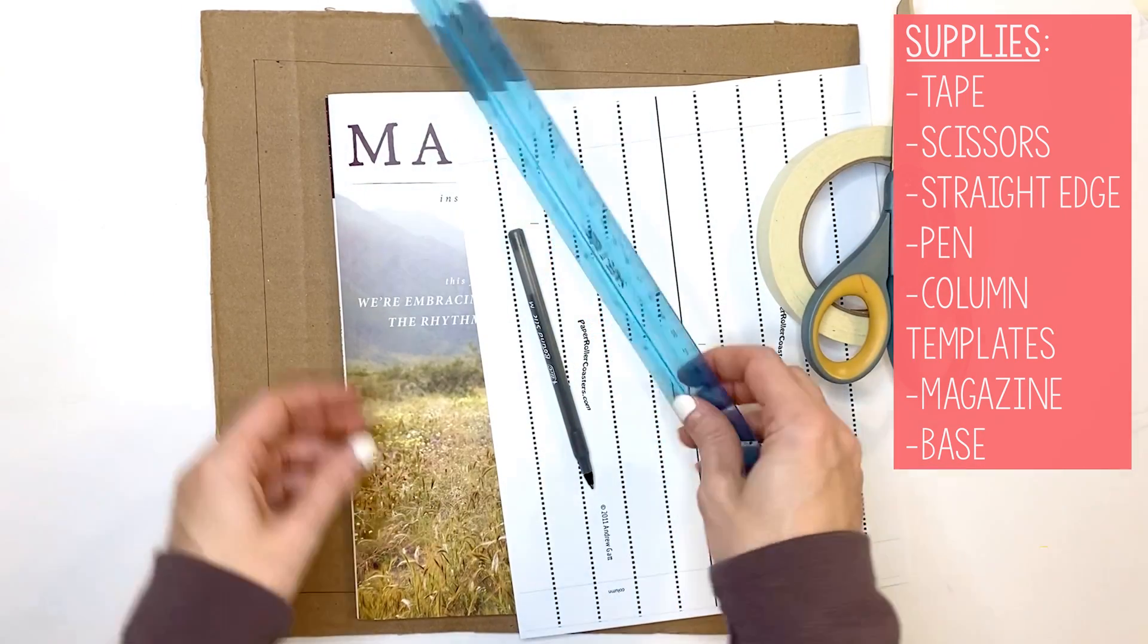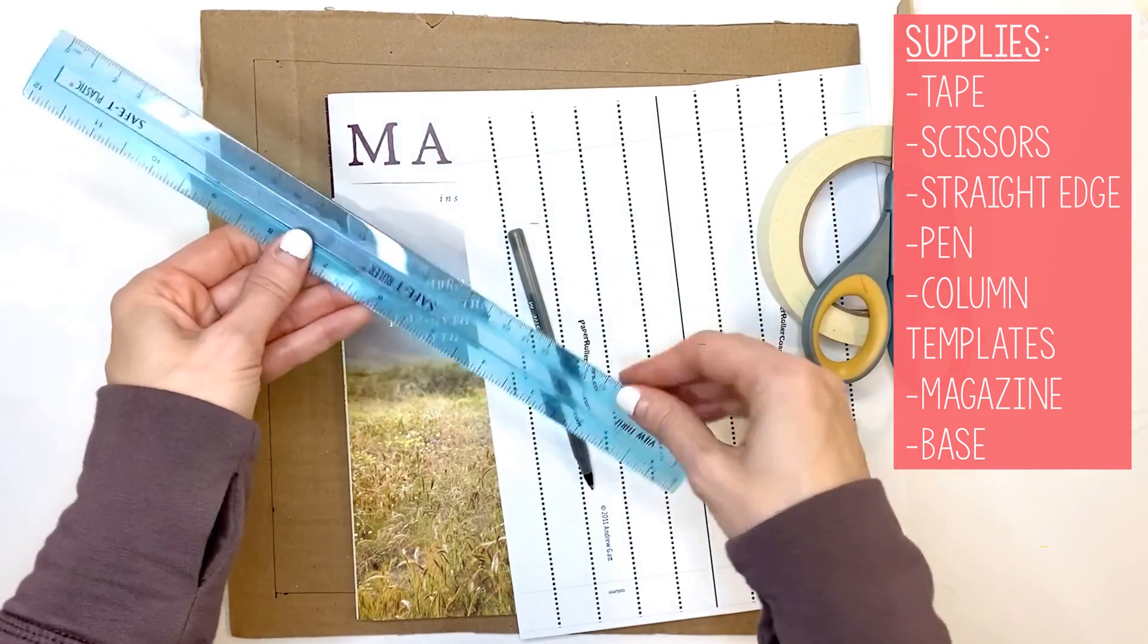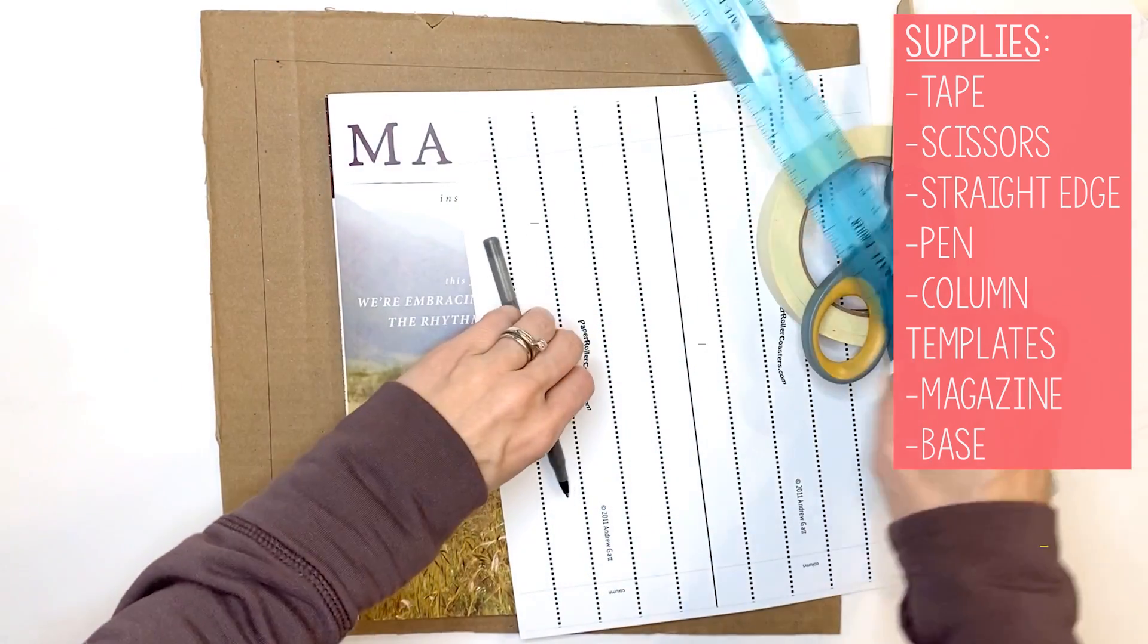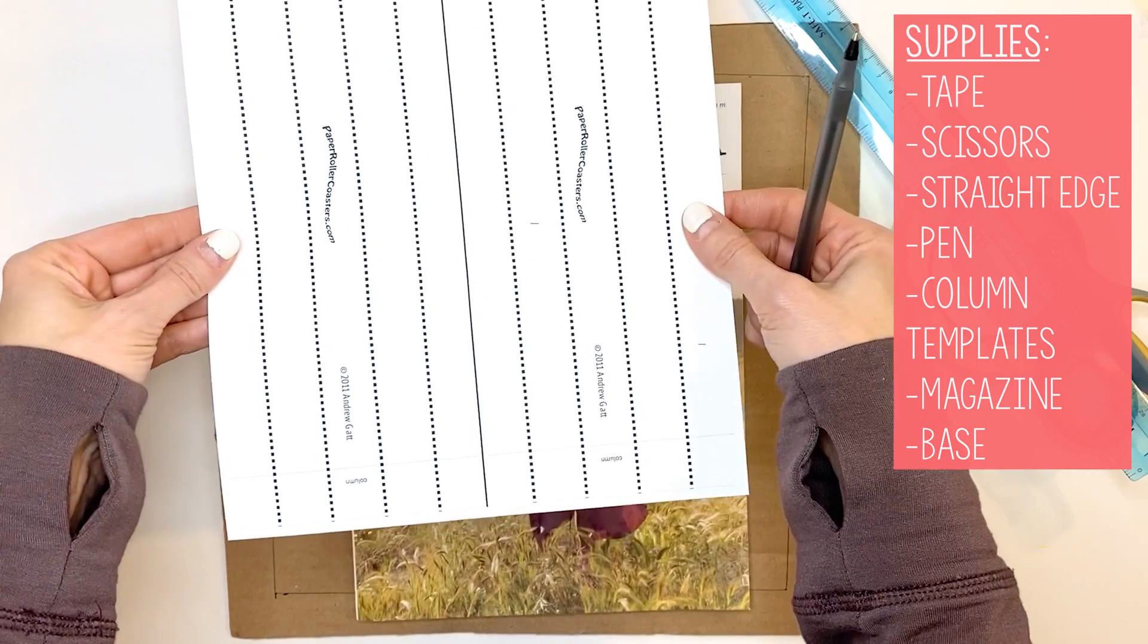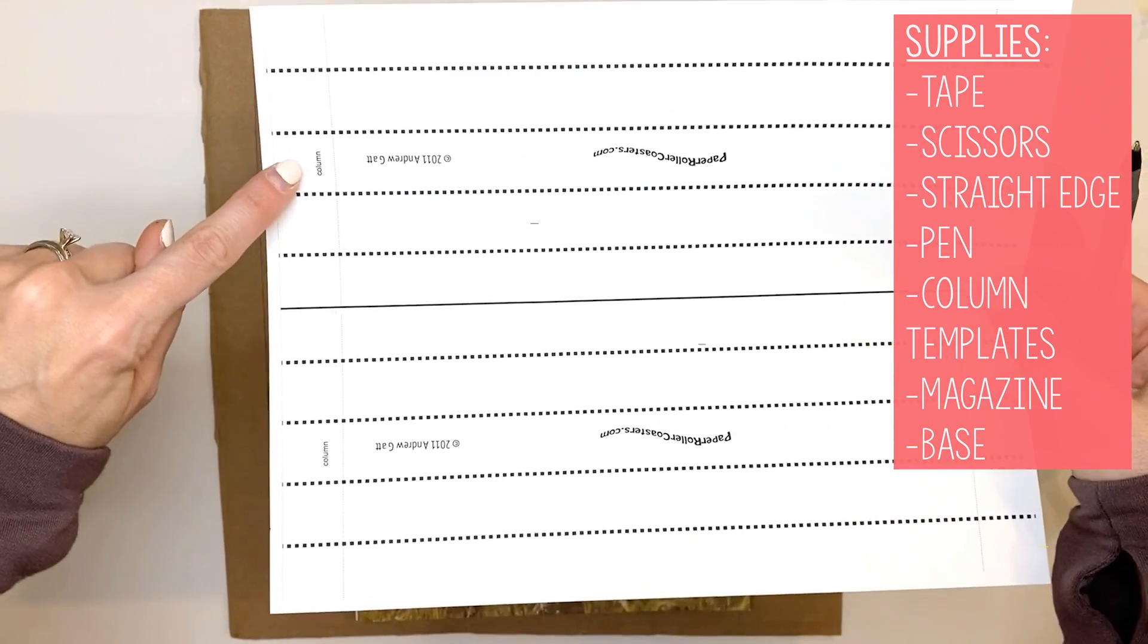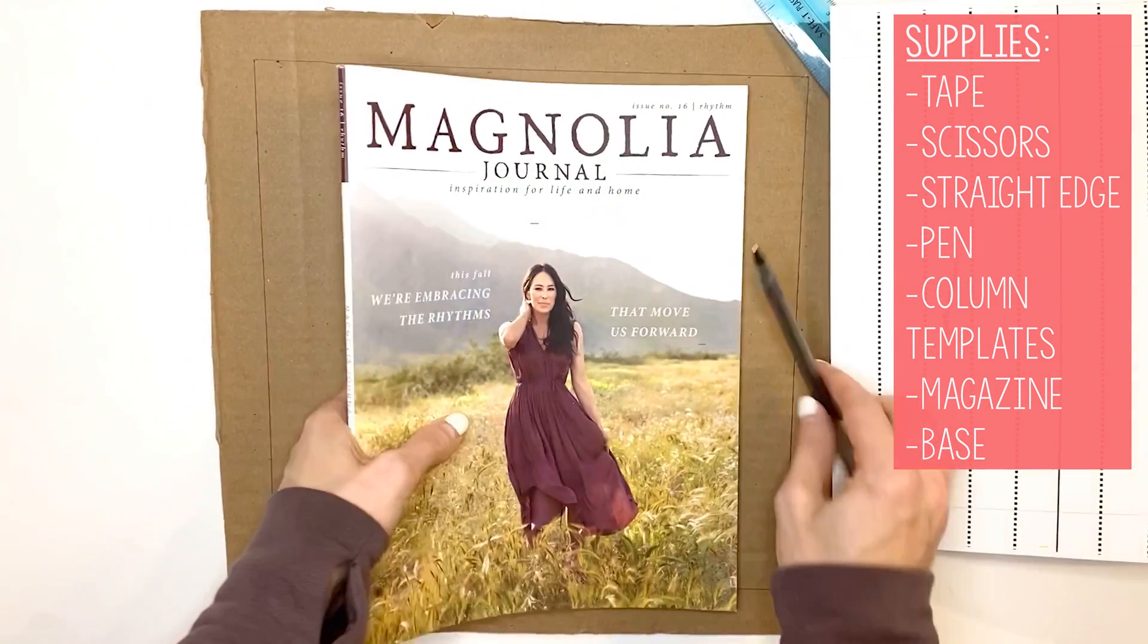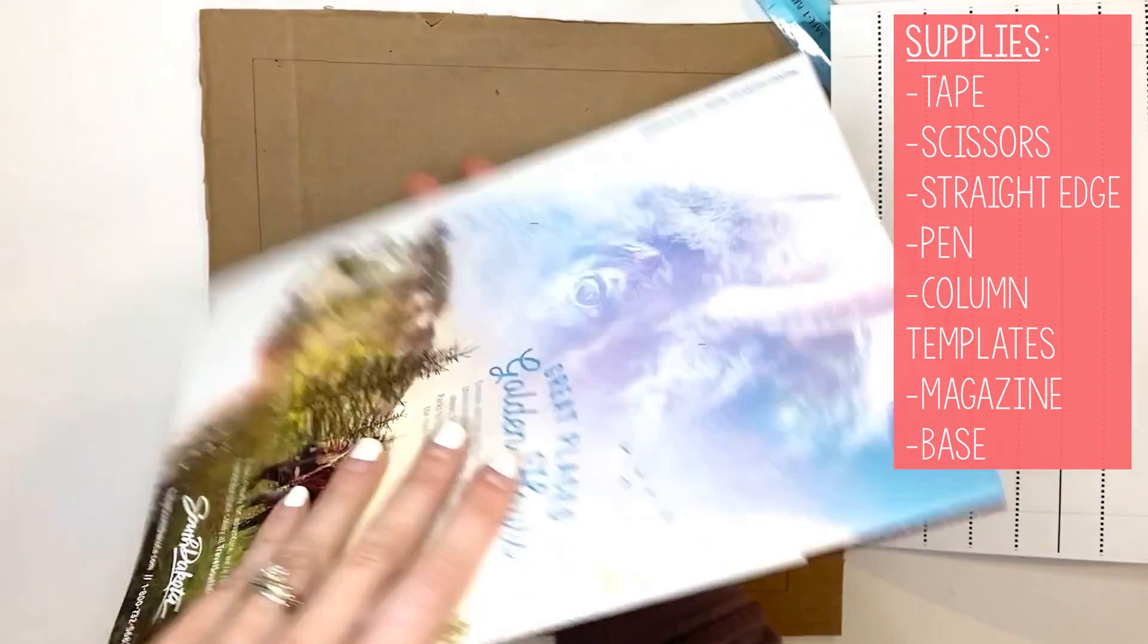You need a ruler or some sort of straight edge to help you make straight lines. You're going to need a pen. You're going to need your columns—those are the white sheets that are labeled 'column'—we're going to be making those first. You need some kind of magazine or book.